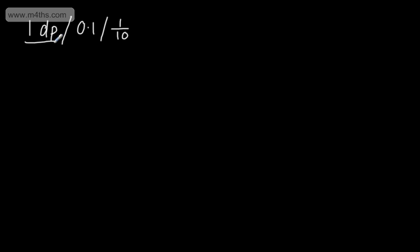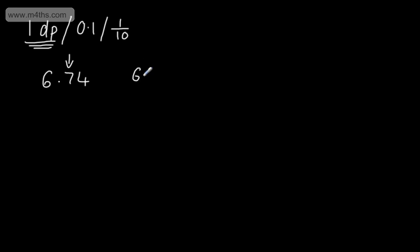Let's have a look at rounding to one decimal place. I'm going to take the number 6.74. This is the number that could potentially change. Our choices to one decimal place are going to be 6.7 or 6.8. To decide, we look at the number next to it — this is the hundredths, or the 0.01.